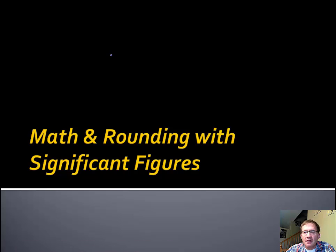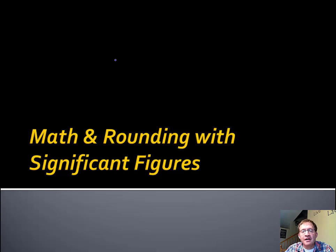We're back with math and how we round with significant figures, this time with multiplication and division. If you recall, when we have addition and subtraction, we round based on decimal places — we only have as many decimal places as the one with the fewest. When we're multiplying and dividing, it's not decimal places at all. It's all about significant figures.